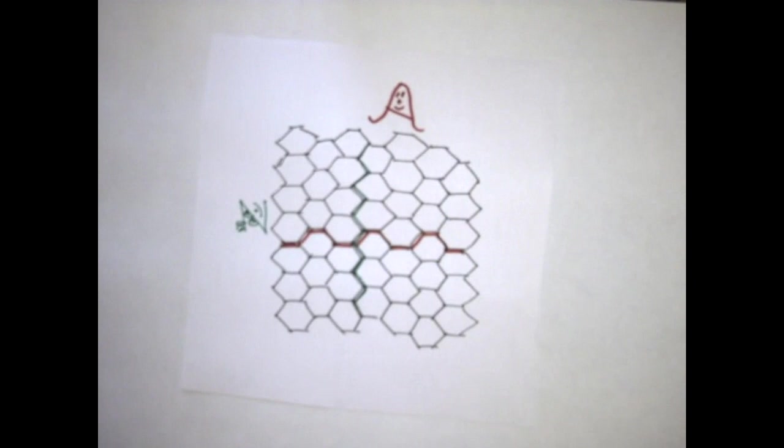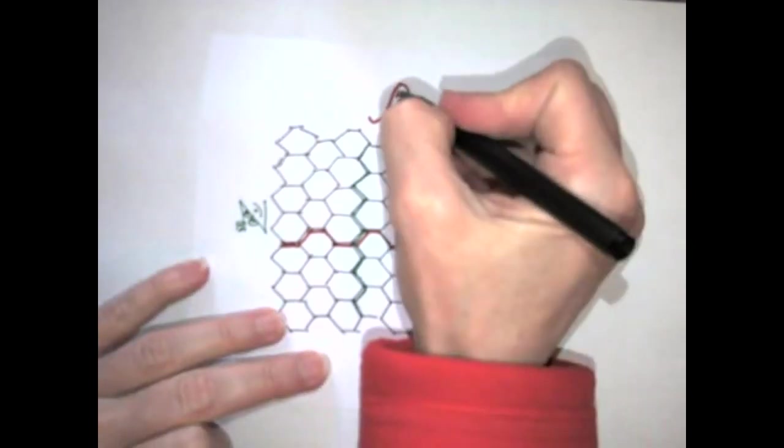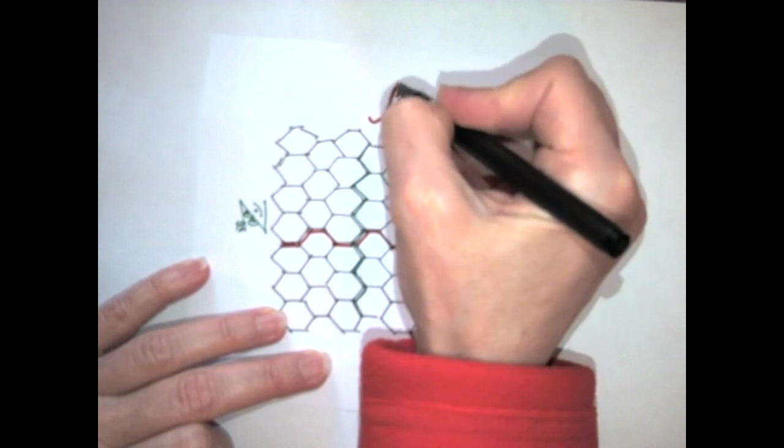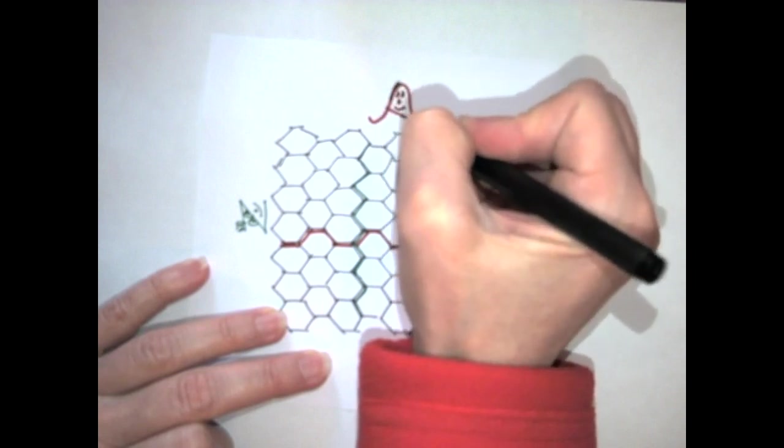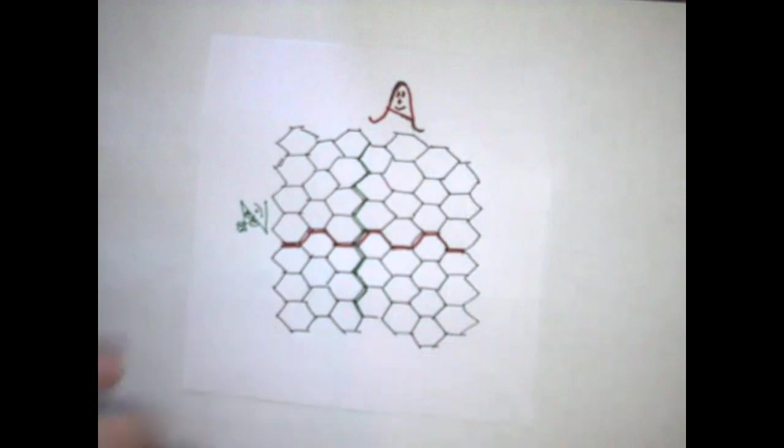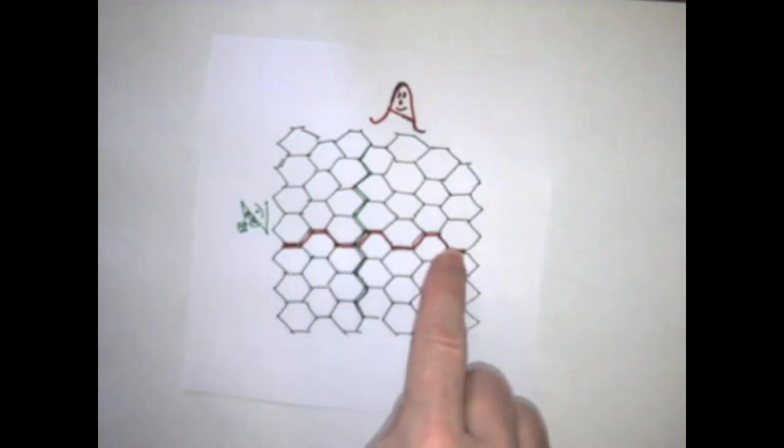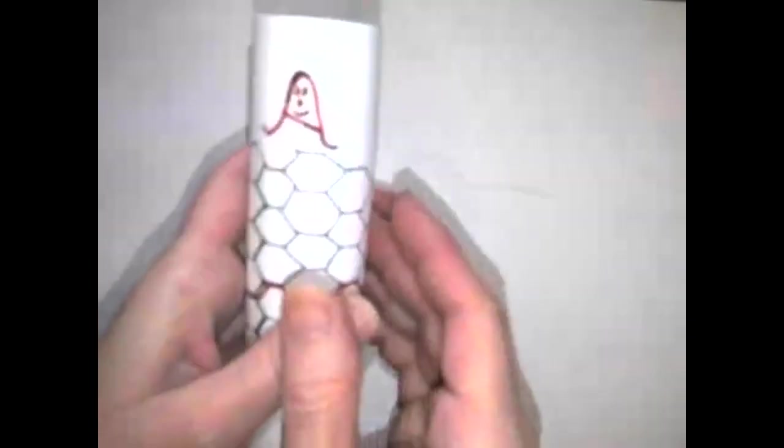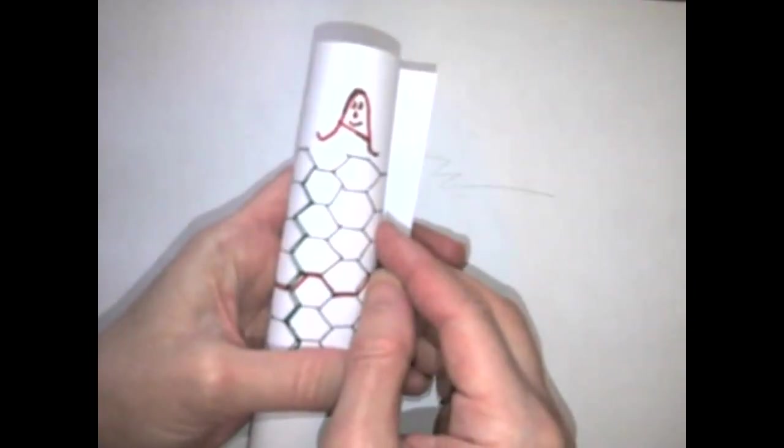I'm going to put a fancy A up here at the top and give this little carbon nanotube some personality. I'll call her Armchair Anya. And Armchair Anya is going to have a belt of this armchair pattern around her when it's rolled up into a carbon nanotube.